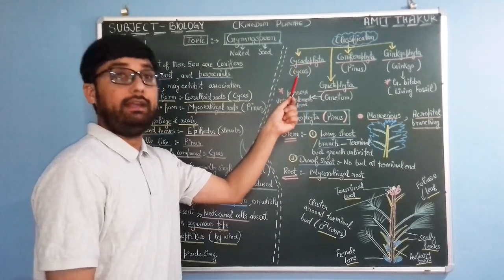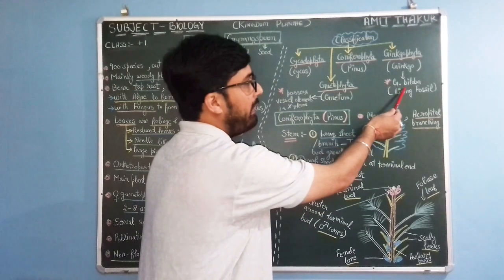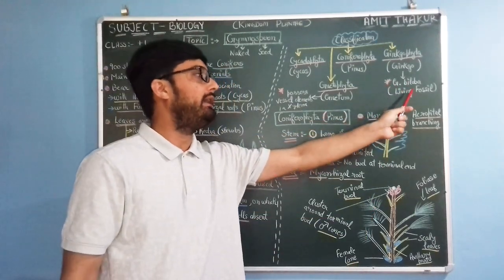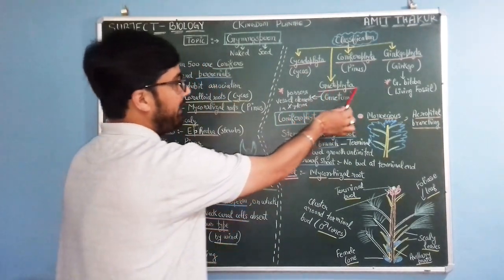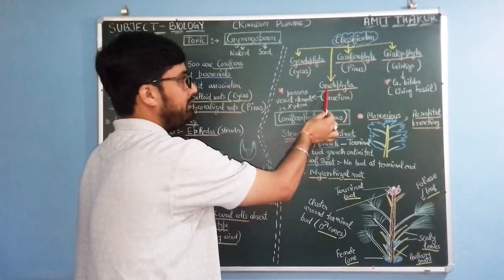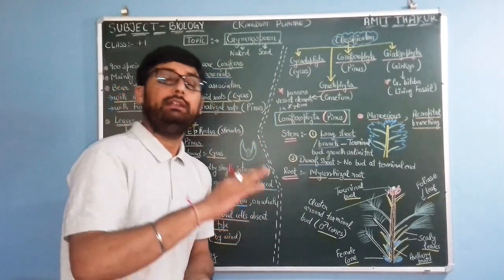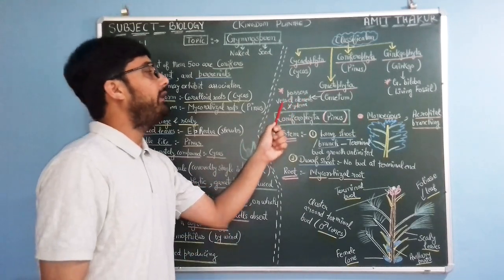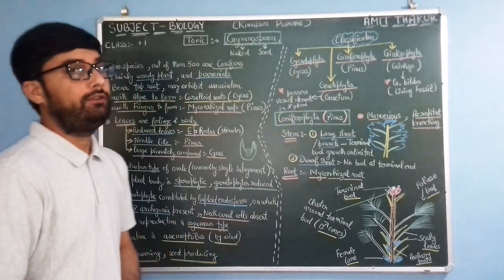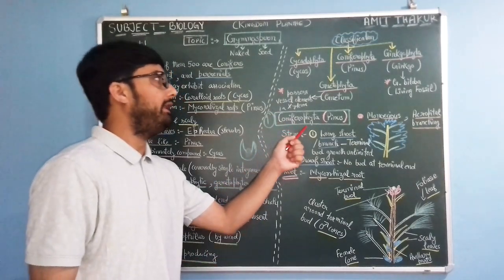Cycadophyta includes mainly Cycas. Coniferophyta includes Pinus. Ginkgophyta includes Ginkgo biloba, which is known as a living fossil — this is very important. Gnetophyta includes tropical green plants that, unlike other gymnosperms, do possess xylem vessels or vessel elements in xylem, which may be absent in other gymnosperm species.